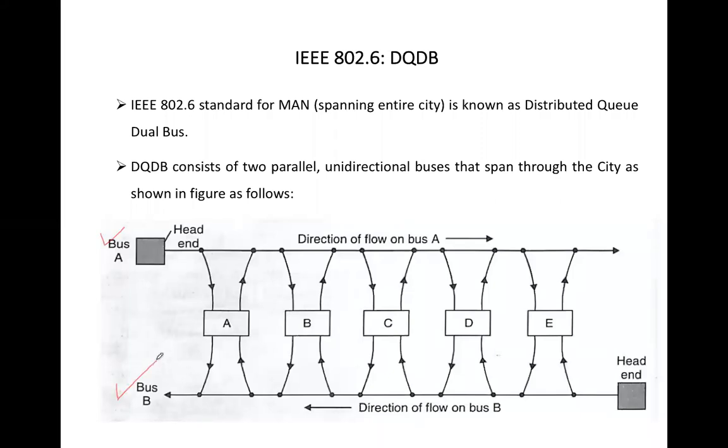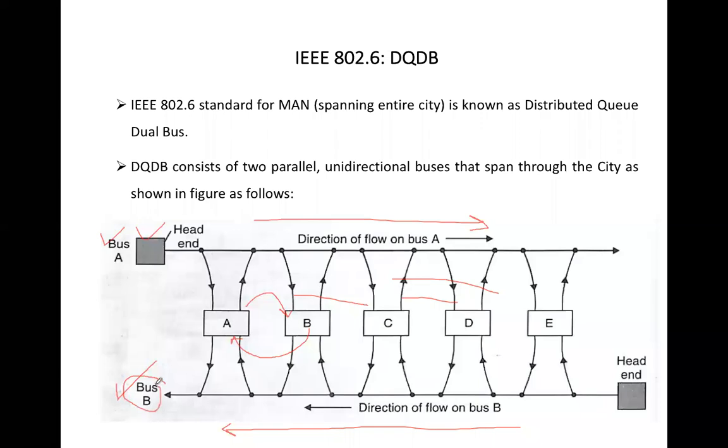Both the buses are unidirectional, means the direction of bus A is from left to right, and the direction of bus B is from right to left. Every station is connected to both the buses. If a station wants to transmit data to its right-hand side station, for example if station A wants to transmit data to station B, C, D or E, it will be using bus A. But if a station wants to transmit data to the station on its left-hand side, for example if station B wants to transmit data to A, then it will be using bus B.